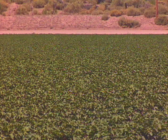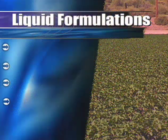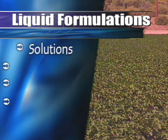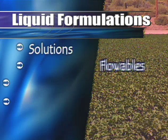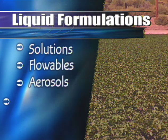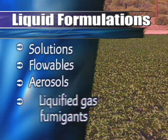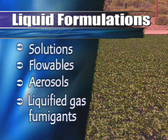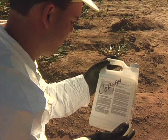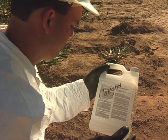Formulations are either liquid or dry. There are four types of liquid formulations. Solutions are one formulation that comes ready for use and requires special application equipment. Flowables must be mixed with water. Aerosols in low concentration are often used indoors as a fine spray or mist. Liquefied gas fumigants turn into gas when applied — some are packed in pressure containers. Before attempting to use any of these pesticides, be sure to read and understand all the instructions on the label.